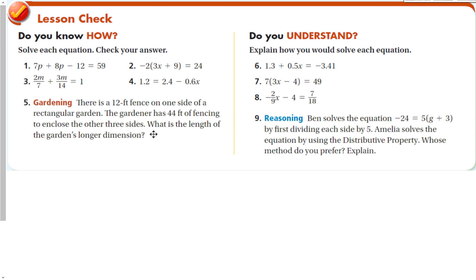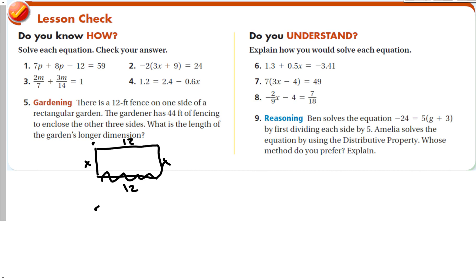For the word problem: there's a 12-foot fence on one side of a rectangular garden and the gardener has 44 feet of fencing to enclose the other three sides — what's the length of the longer dimension? If I have a rectangle and I know this side is 12, the opposite side also has to be 12, and these two remaining sides are x. So 2x plus another 12 feet, because those two sides have to be the same, equals 44. Subtract 12, divide by 2, and that gives me 16. So this side is 16 feet.